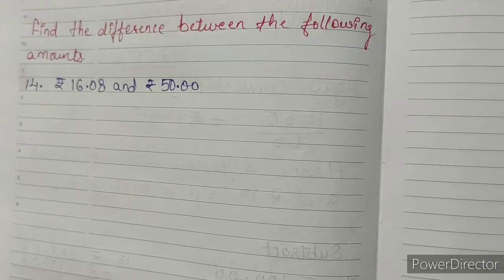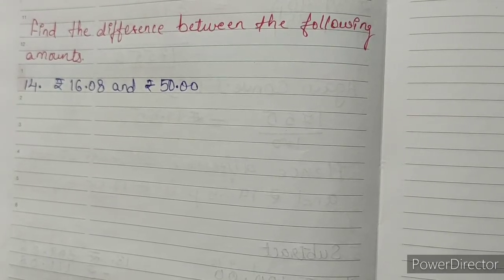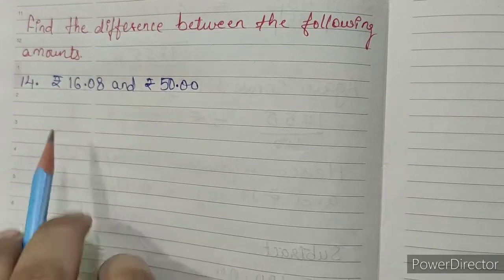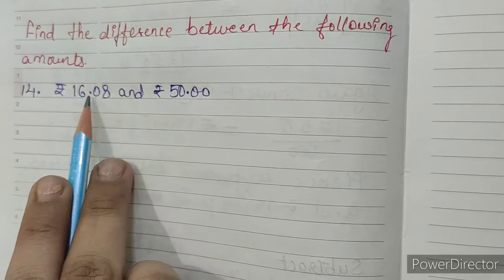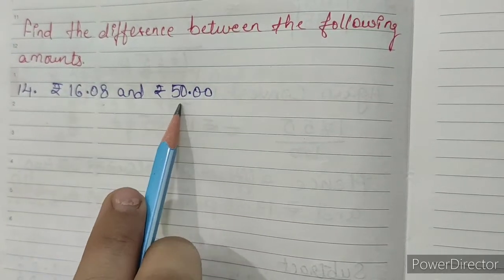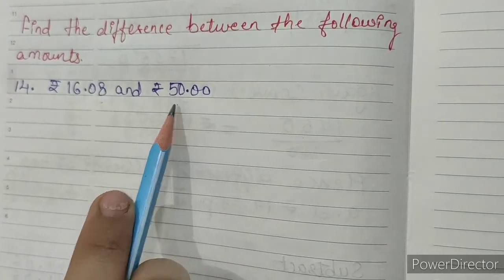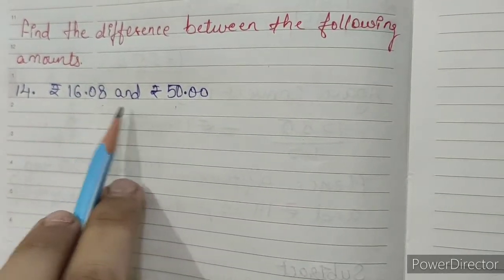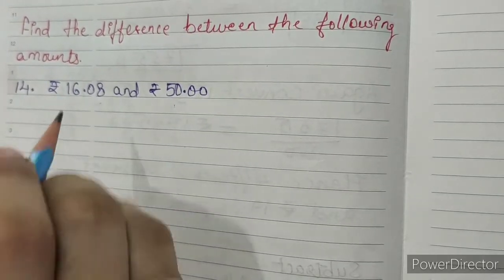Find the difference between the following amounts. Question number 14: rupees 16.08 and rupees 50.00. First of all we have to compare both the amounts.